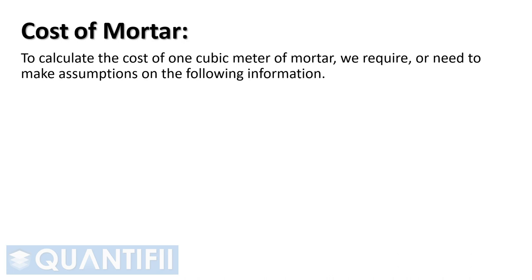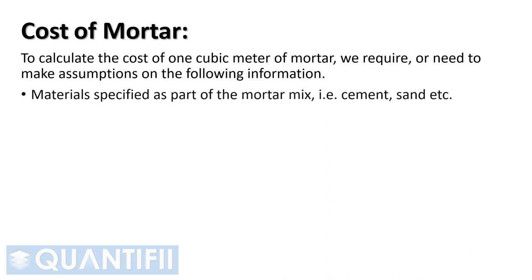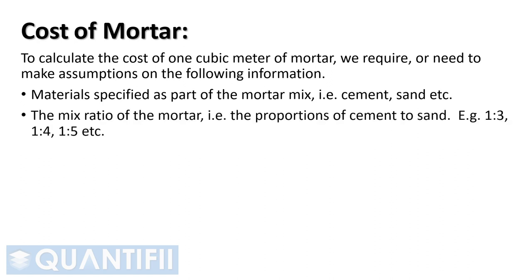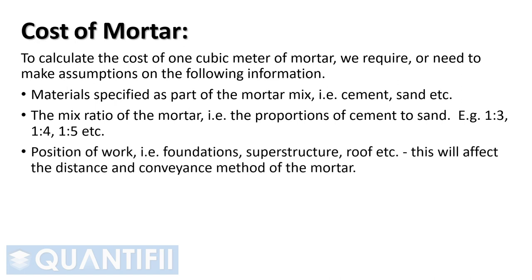To calculate the cost of one cubic meter of mortar, we require or need to make assumptions on the following information: materials specified as part of the mortar mix, that is cement, sand, etc.; the mix ratio of the mortar, that is the proportions of cement to sand, for example 1 to 3, 1 to 4 or 1 to 5, etc.; and the position of work, such as foundations, superstructure, roof, etc. This will affect the distance to transport and conveyance method of the mortar.